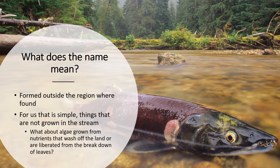One difficulty is how you actually classify things, and I want to stress that these are all conceptual models — they're all wrong at some level. We're making artificial boxes so that we can understand the systems. For instance, algae grown from nutrients that come from the land and are liberated by the breakdown of leaves are still considered autochthonous, even though some of the material the algae is using is allochthonous. In general, we will talk about whole groups as either autochthonous or allochthonous.